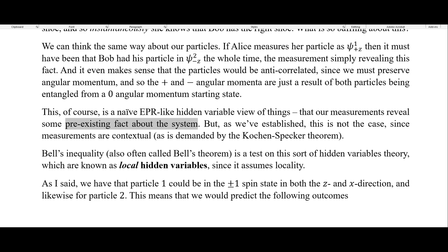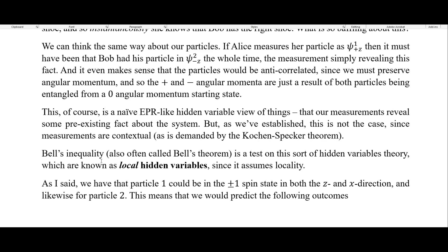But as we've established, this is not the case, since measurements are contextual — meaning we can't think about it in the analogy of the shoe, because when we do a measurement it has to be contextual as demanded by the Kochen-Specker theorem. Bell's inequality, also often called Bell's theorem, is a test of this sort of hidden variable theory, which are known as local hidden variables since it assumes locality.